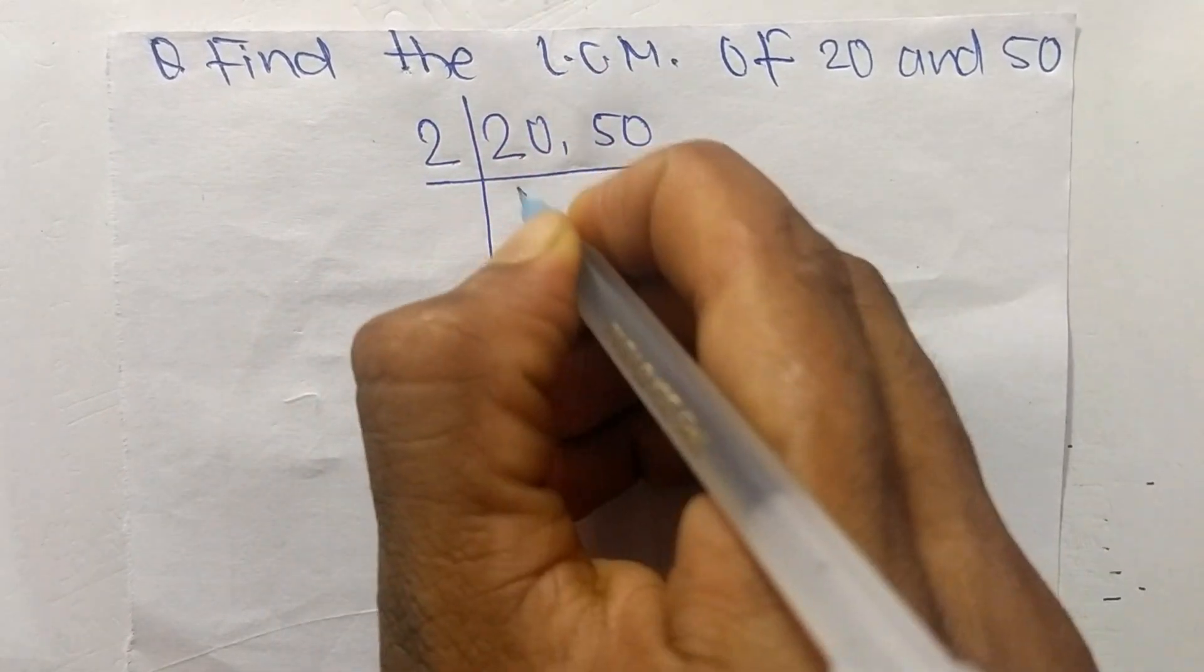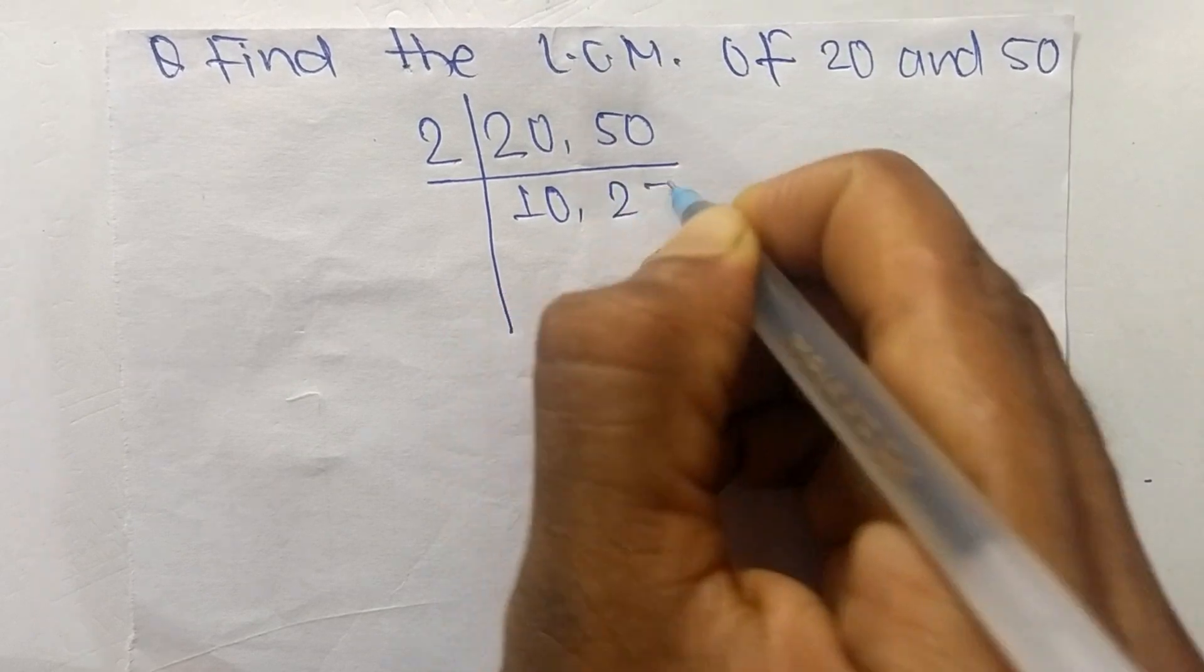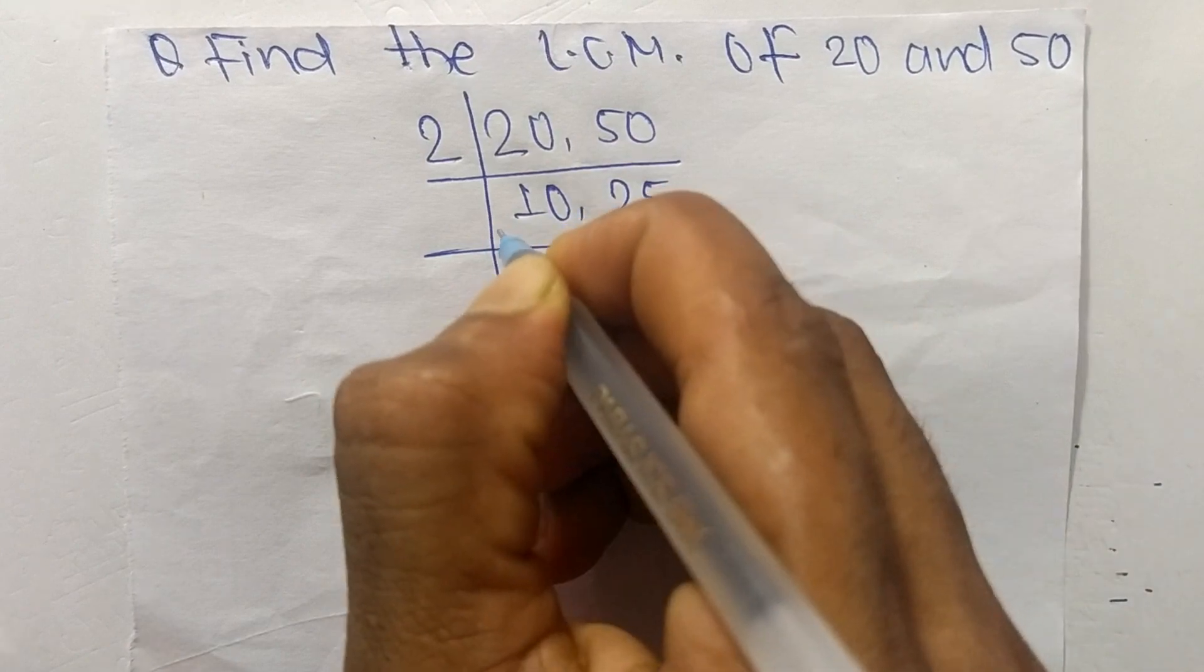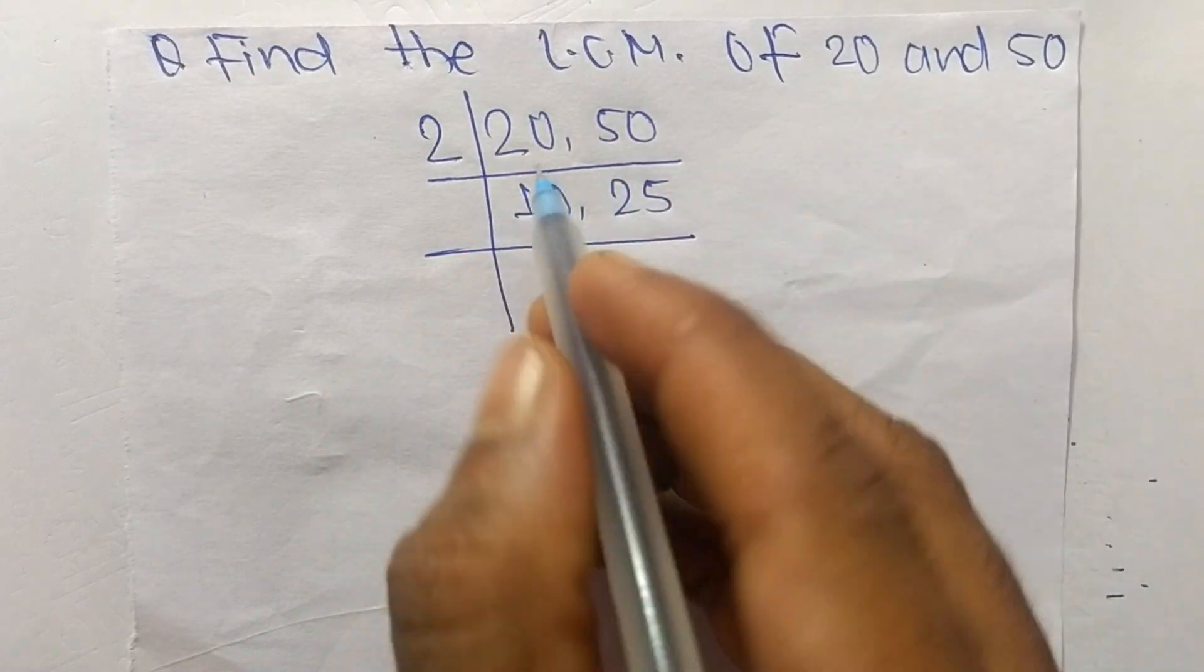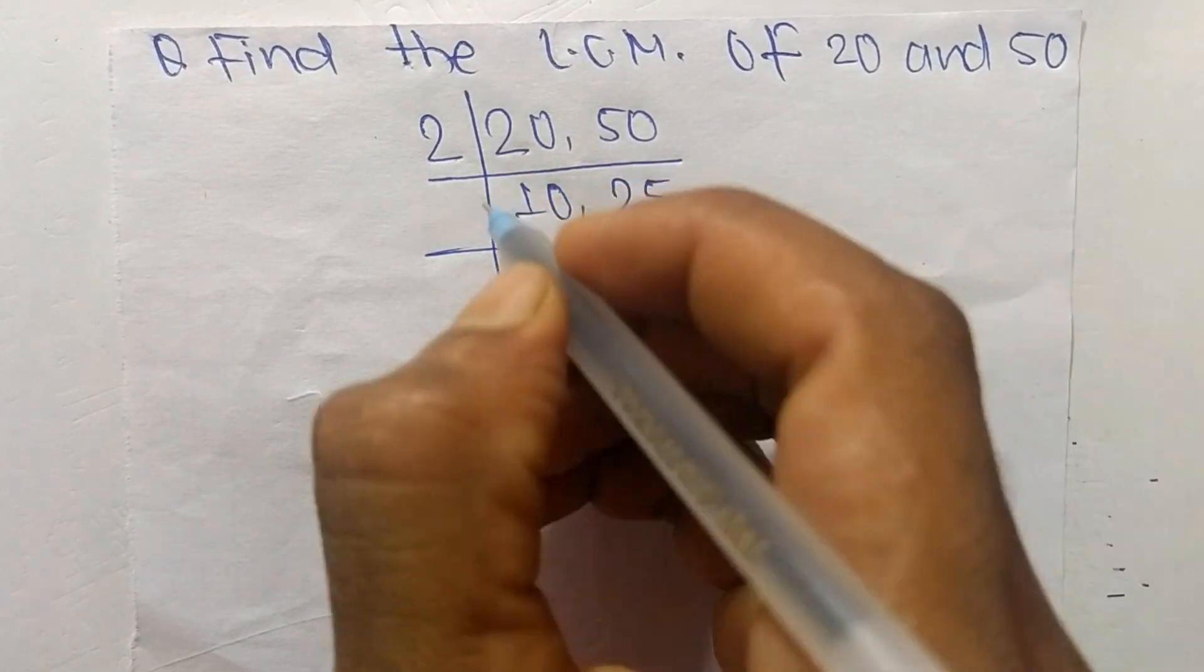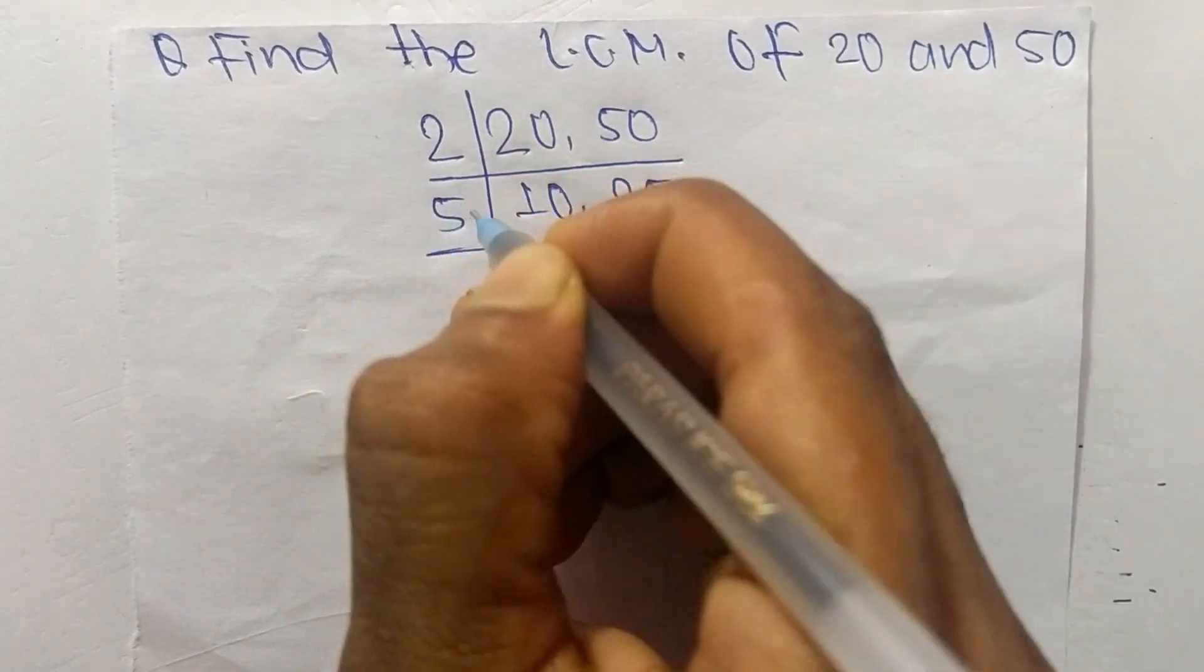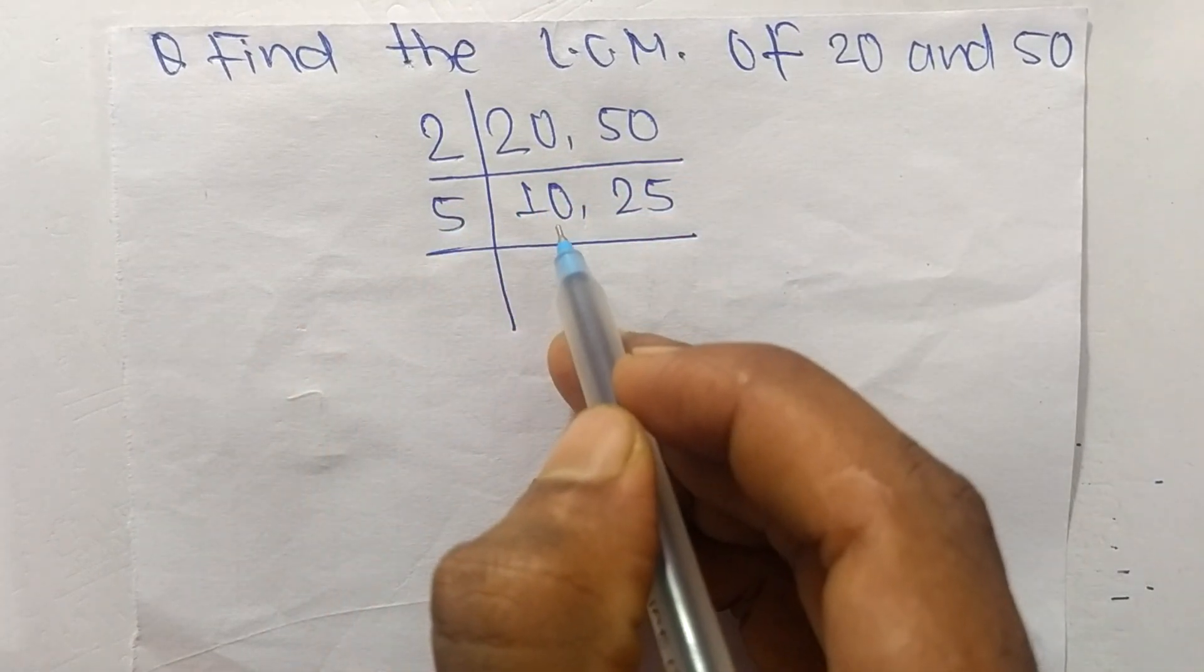So 2 times 10 means 20, 2 times 25 means it is 50. So now we choose the number which can exactly divide 10 and 25, so it is 5. Now 2 can exactly divide 10 but it can't divide 25, so we take here 5.